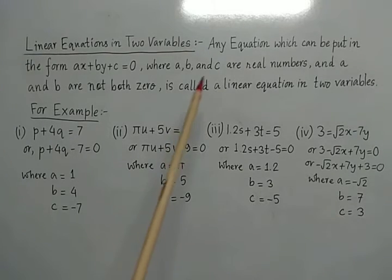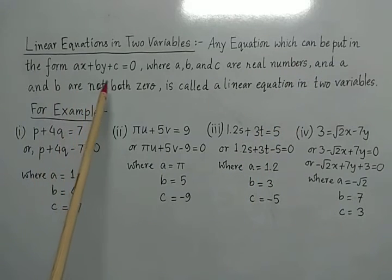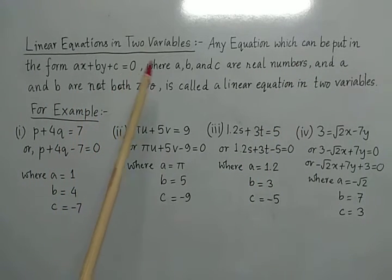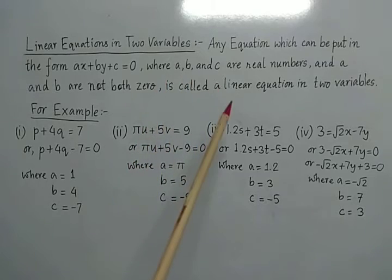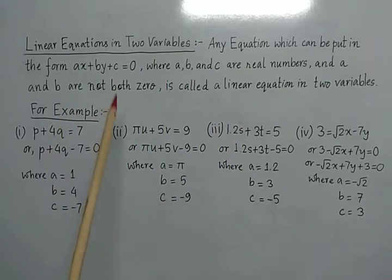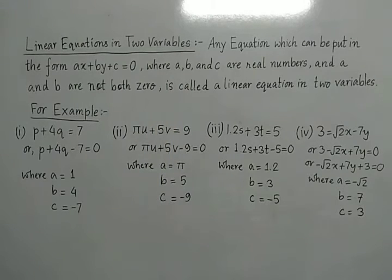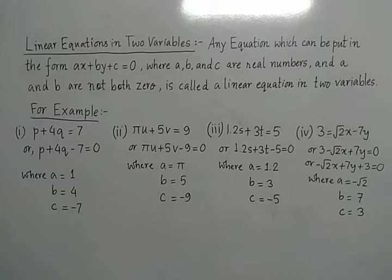As you can see on the screen, the definition is given. Any equation which can be put in the form ax plus by plus c equals to 0 — where a, b, and c are real numbers and a and b are not both 0 — is called a linear equation in two variables. Now let us understand what this definition actually means. The form of the equation is very important: ax plus by plus c equals to 0.